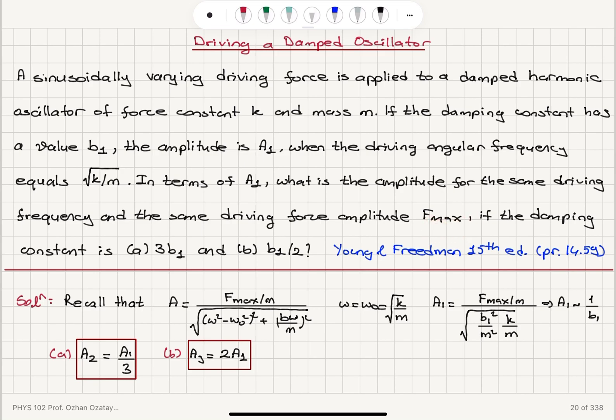And we can see in terms of a₁, when we change the b₁ value to 3 times b₁, the amplitude will be 1 third a₁. When we change the b₁ to b₁ over 2, the amplitude will be twice the original amplitude.